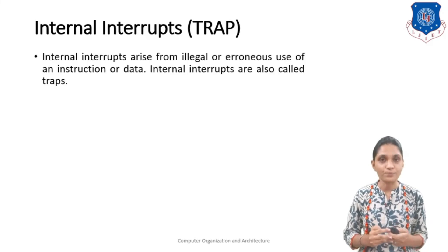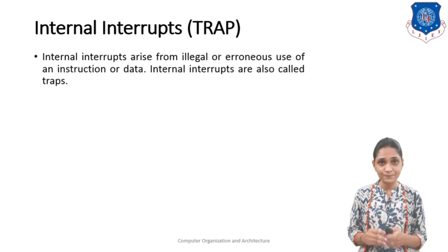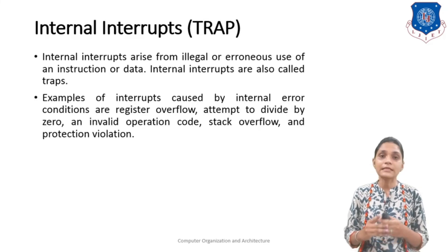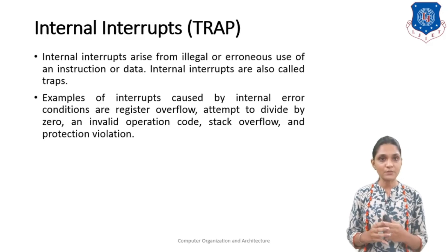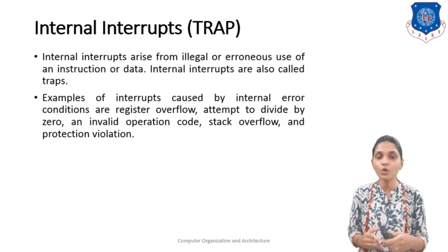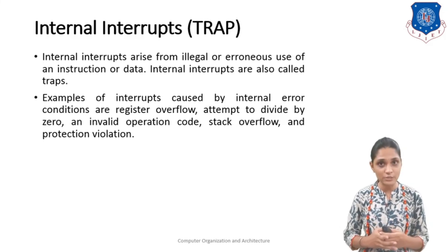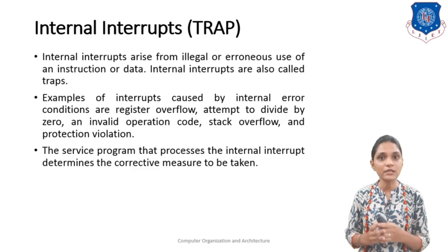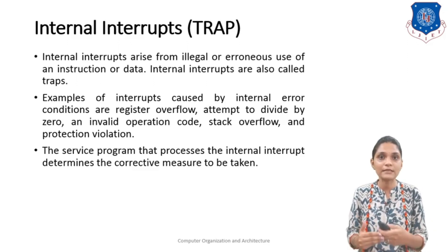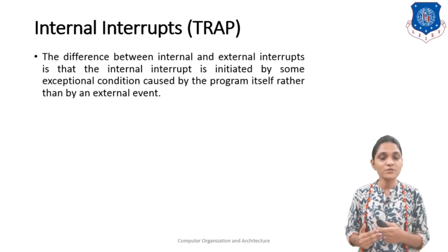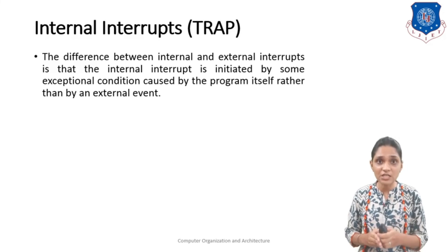The next type is internal interrupt, also known as a trap. Internal interrupts arise from illegal or erroneous use of an instruction or data. Examples of interrupt conditions caused by internal errors are: register overflow, attempt to divide by zero, invalid operation code, stack overflow, or protection violation. The service program that processes the internal interrupt determines the corrective measures to be taken to address the problem caused by the interrupt.